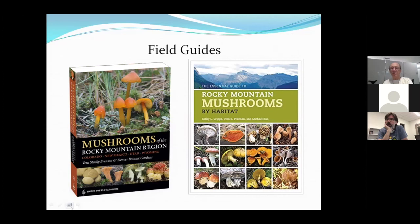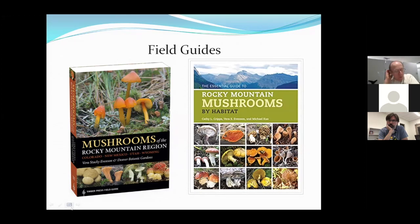A question came up: how do different mushrooms look at different stages, making them hard to identify? The cap might start small and then expand as it matures. In a normal season, you'll typically find a range of maturities of the same species in a small area. Typically they don't change a lot — if it's got a pointy cap it'll always have a pointy cap. As they age, colors might get washed out and they may dry and crack, but in general the shape holds.